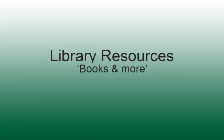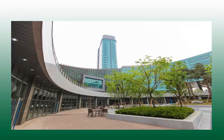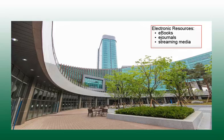Welcome to the George Mason University Libraries books and more tutorial on finding electronically available sources. Mason Libraries has a large collection of electronic resources including e-books, e-journals, and streaming media, and there are many ways to search and access these materials. In this video you will learn how to limit to electronic resources on the books and more tab from the library's homepage.